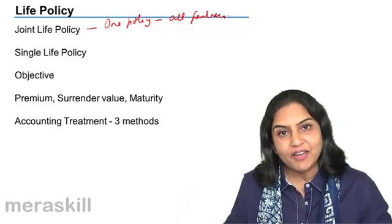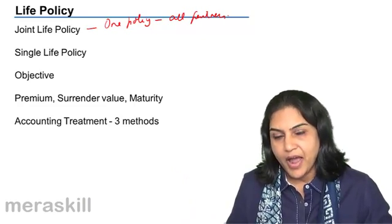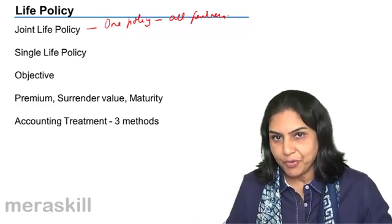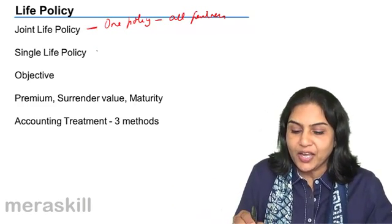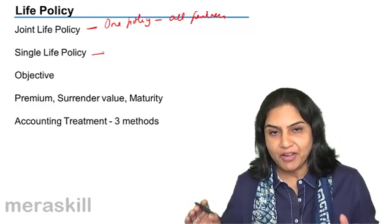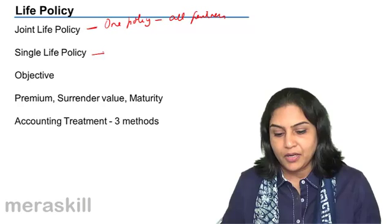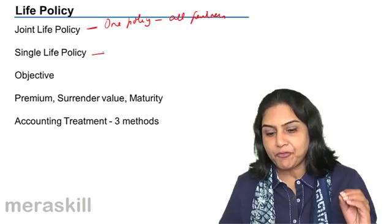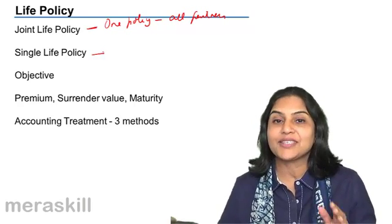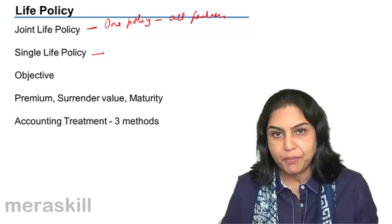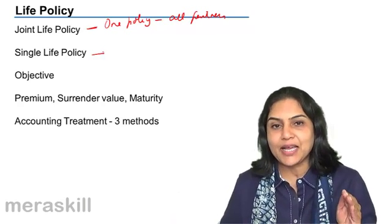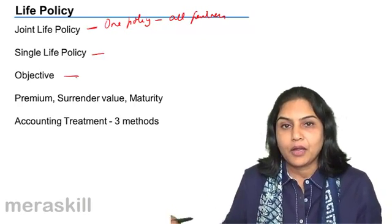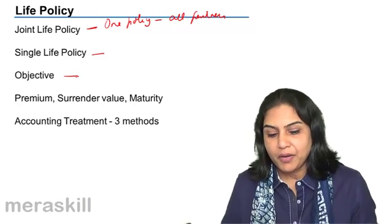Or you have a single life policy, that is each partner has a policy. A policy is taken for the life of each partner separately. Mind you, whether it's a joint life policy or a single life policy, when we are talking of life policies in a partnership firm, the premium which is paid for the insurance is an expense of the partnership firm, met by the partnership firm. The purpose, like I said before, is to provide for funds on the death or retirement of a partner.